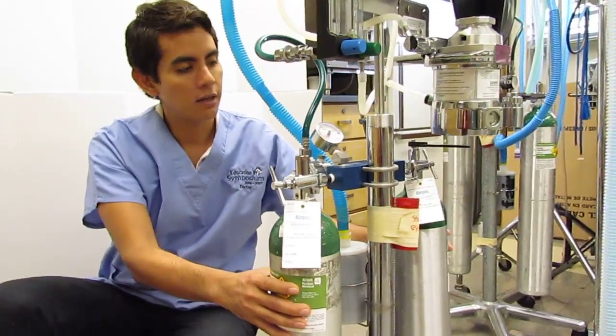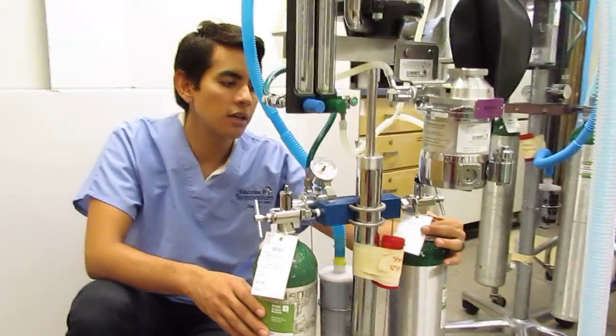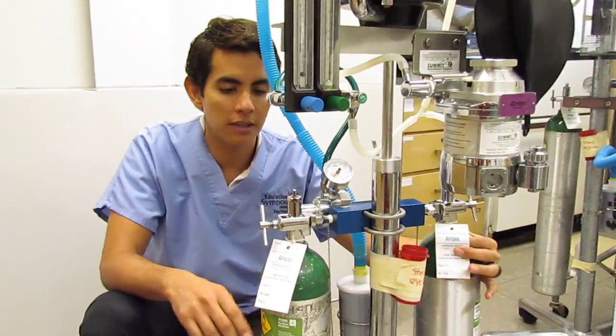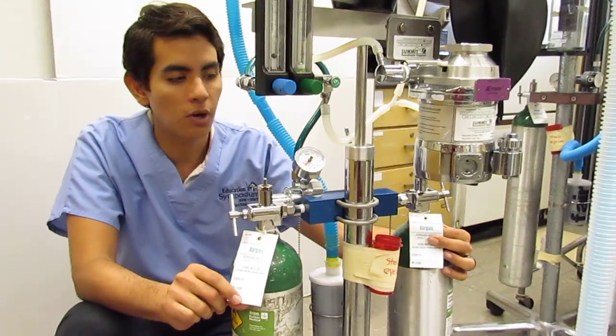You've got two E tanks here. The one on your right is marked as in use by this tab. The one on your left is marked as full.